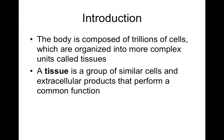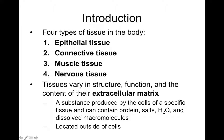It's human nature to put things into categories. We've defined tissues based on how they look and how they function. A tissue is just a group of similar cells that perform a common function, and there are four main tissue types in the body: epithelial, connective, muscle, and nervous.